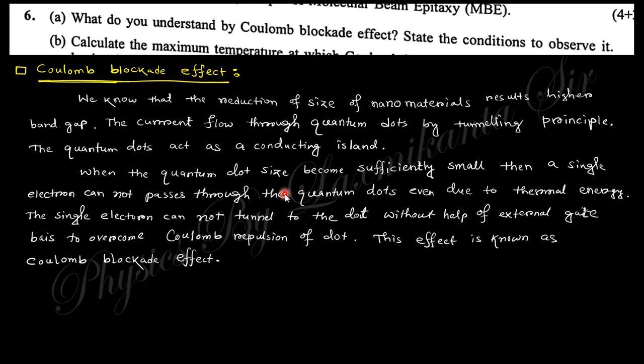This effect is known as Coulomb blockade effect. That means you do not get any current - the electron is blocked here. This is the Coulomb blockade effect: after reduction of the size of quantum dot, even a single electron cannot pass through this material, through this quantum dot, through the tunneling process.